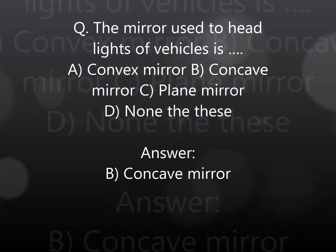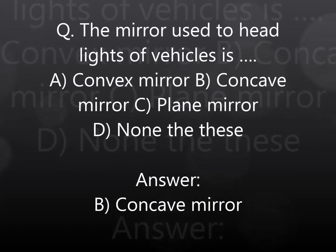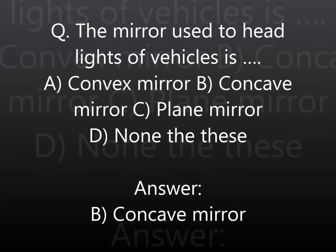The mirror used to headlights of vehicles is: A. Convex mirror, B. Concave mirror, C. Plane mirror, D. None of these. Answer: B. Concave mirror.